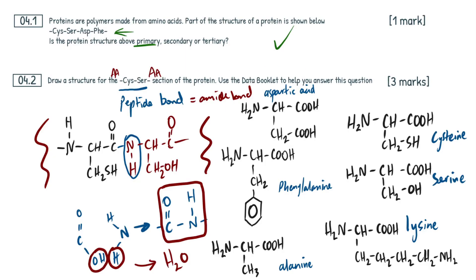Where do our marks come from here? The first mark is for the peptide or amide bond in the middle. The second mark comes from including the correct R groups — the correct R group for cysteine and for serine. Looking through the mark scheme, this is actually a two-mark question, not three. AQA does not require trailing bonds, but please include them anyway — it's the right thing to do. AQA also allows you to flip the two around with serine on the left and cysteine on the right, and you'd still get the marks.